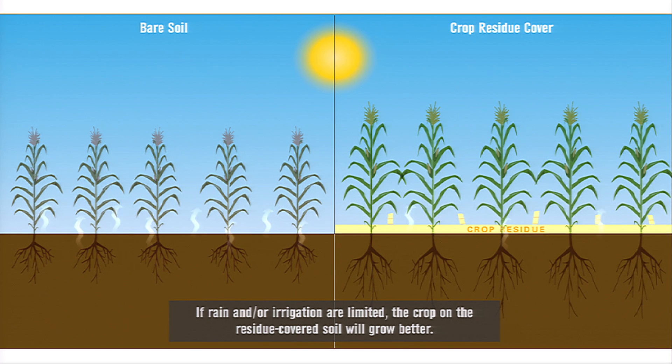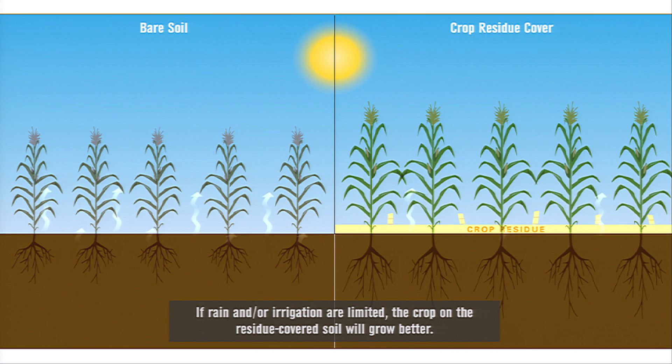If rain and or irrigation are limited, the crop on the residue-covered soil will grow and yield better than the crop on the bare soil.